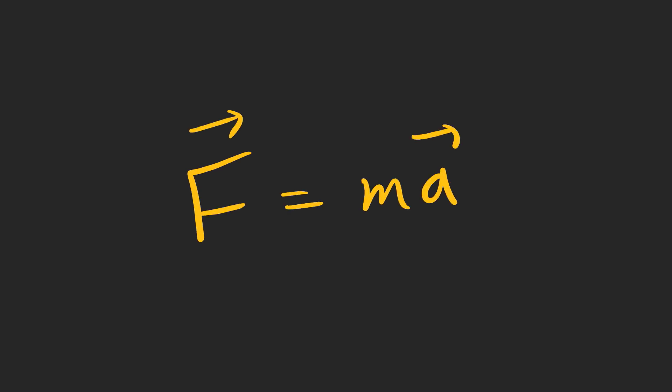In classical physics, we can use this formula to see what happens to a particle. If we exert a force F to a particle with mass M, it gets the acceleration A.